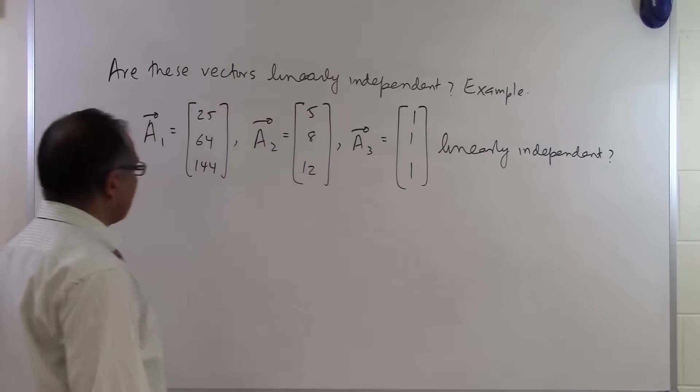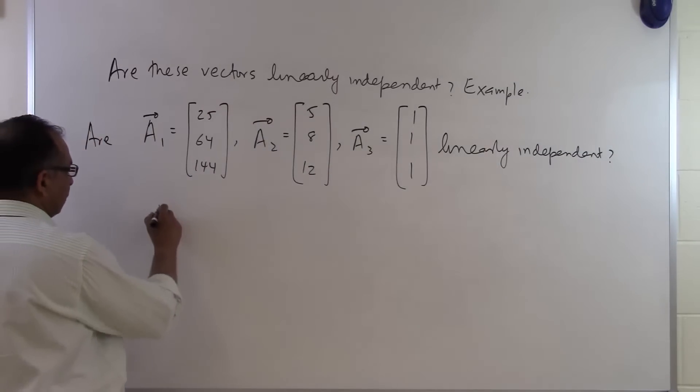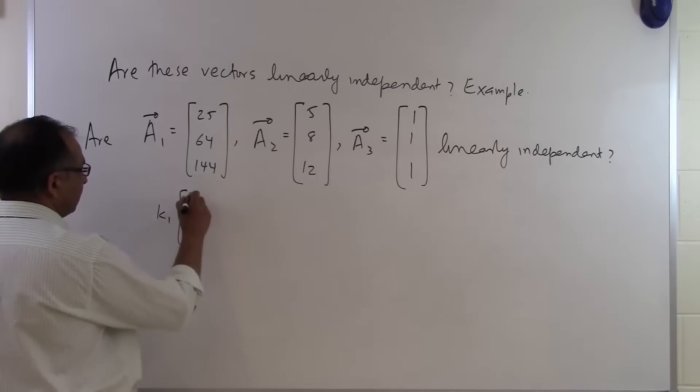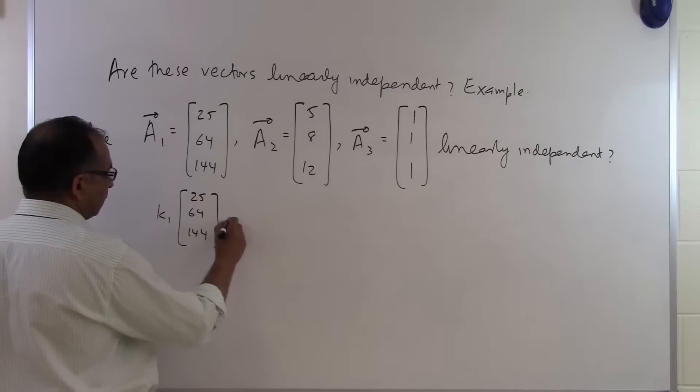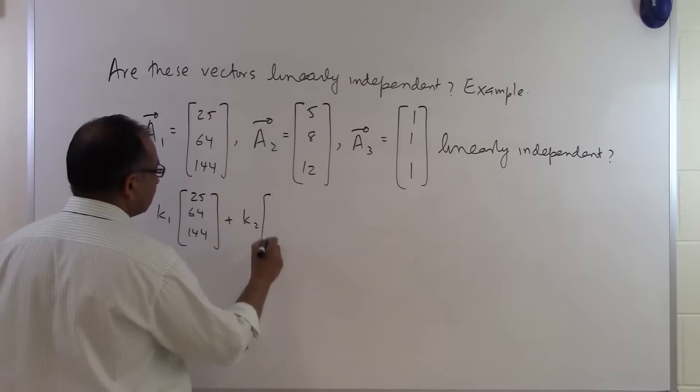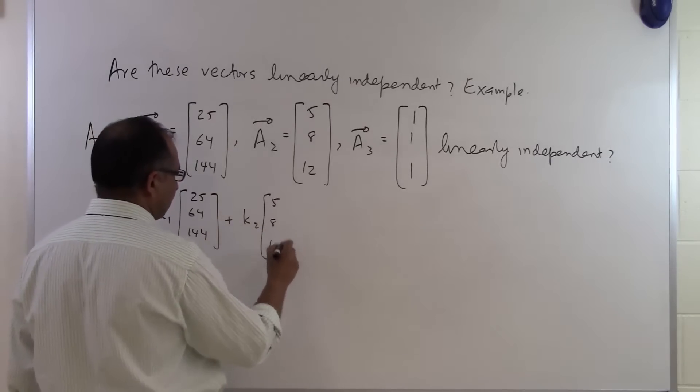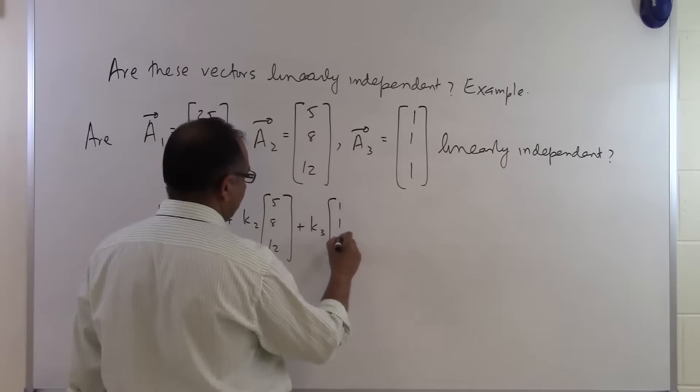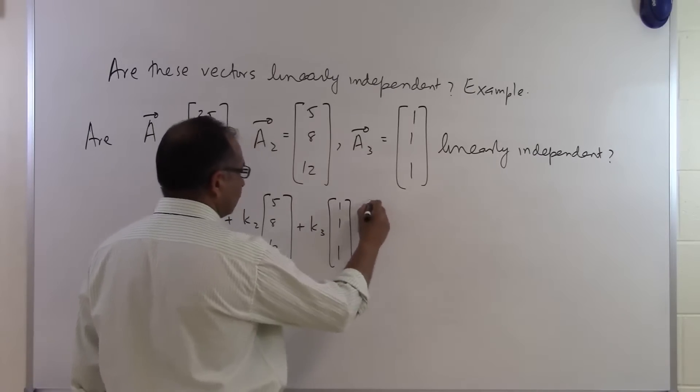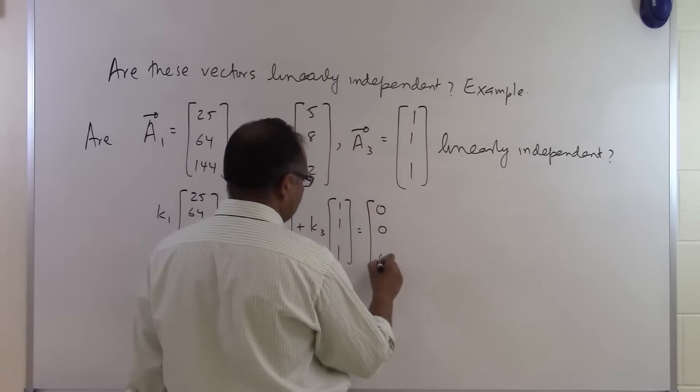So if you take a linear combination of these three vectors, what you are going to get is k1 times 25, 64, 144 plus k2 times 5, 8, and 12 plus k3, 1, 1, 1. And you put that equal to the zero vector which is 0, 0, 0.